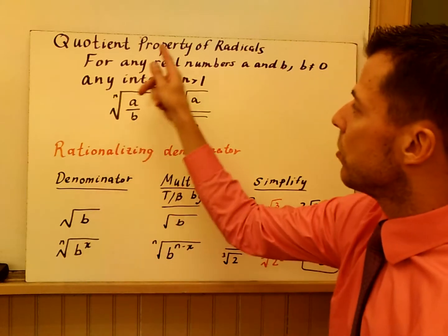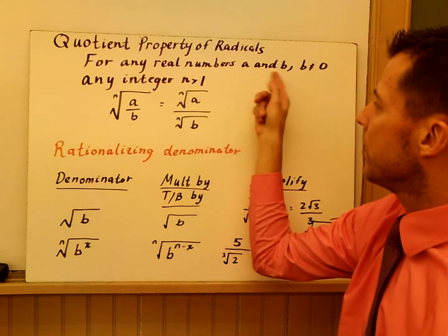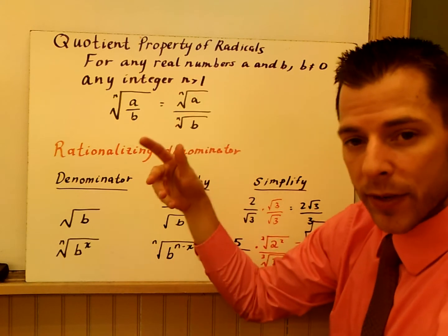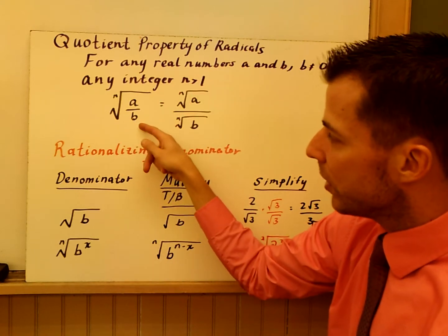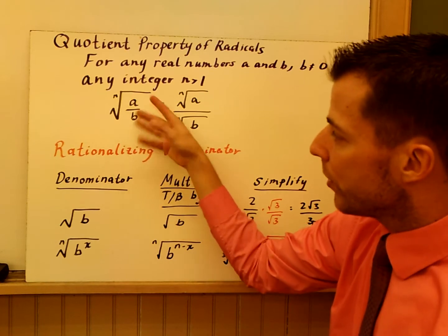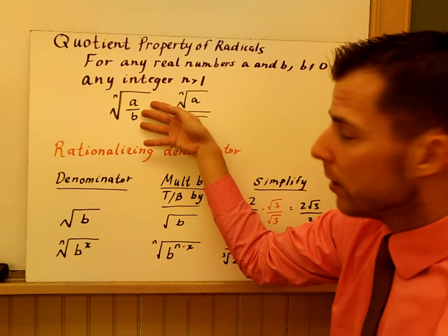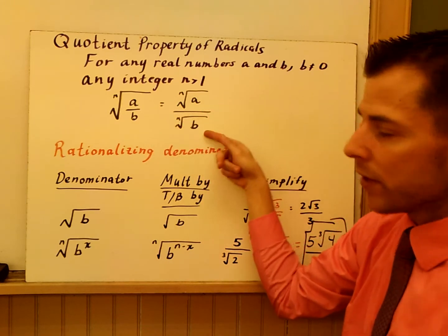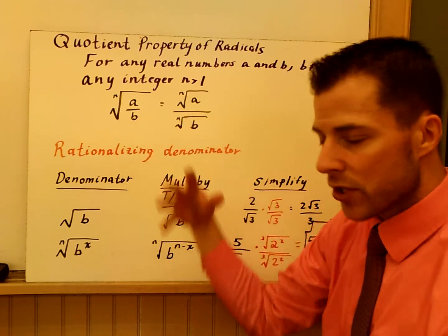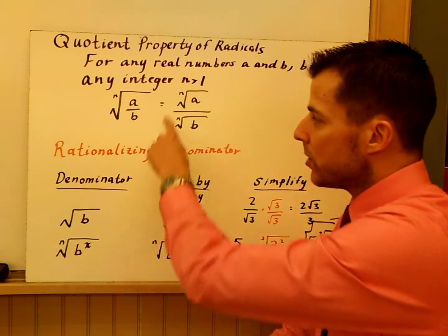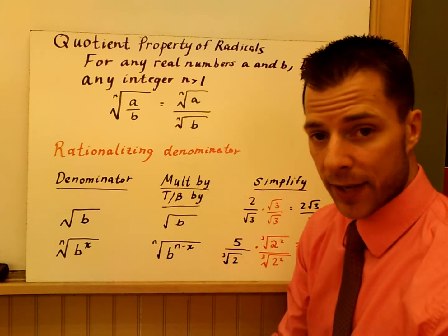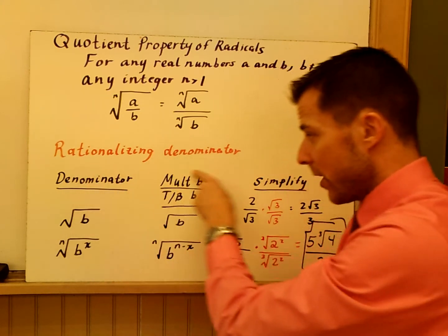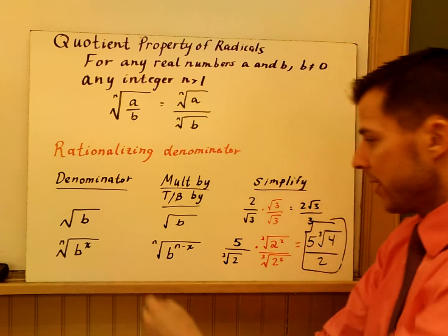This is the quotient property of radicals. For any real numbers a and b, where b is not zero, and any integer index greater than one, you can split up a fraction under an nth radical into the nth root of a over the nth root of b. So you can split the radical to the top and bottom, then try simplifying. We have to add this note: if you have a radical in the denominator, we need to rationalize the denominator.